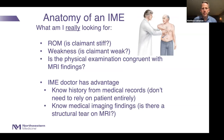What am I really looking for when I perform an IME? Range of motion — is the claimant stiff or not? Weakness — do they have rotator cuff weakness? Is the physical examination congruent with the MRI findings? The IME doctor has a distinct advantage: you know the history from the medical records, you don't have to rely solely on the patient, and you already know the imaging findings — is there a structural tear or not — going into the examination.